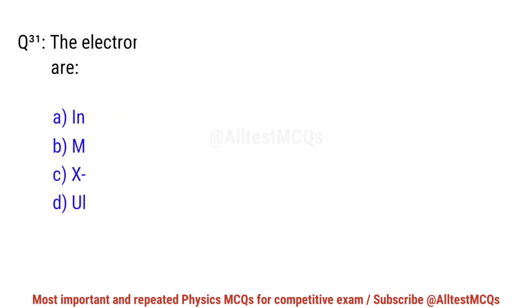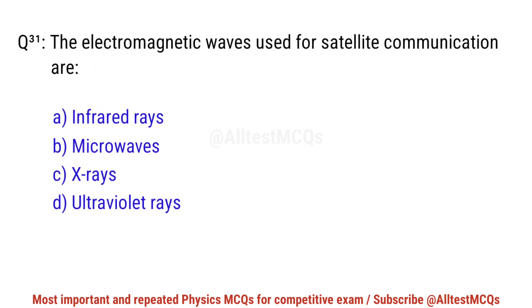Question No. 31. The electromagnetic waves used for satellite communication are? Right option is B. Microwaves.